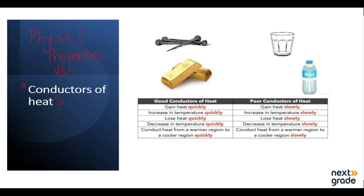What is meant by a conductor of heat? The objects which allow heat to pass through them are called conductors of heat. Examples of good conductors of heat include gold, copper, and silver. These are called good conductors of heat.